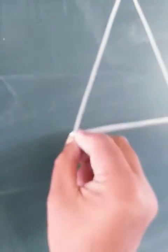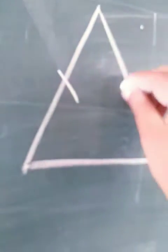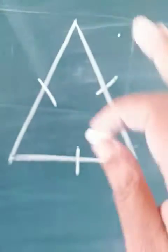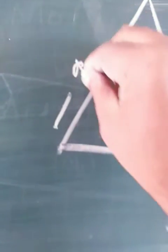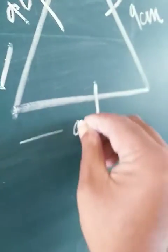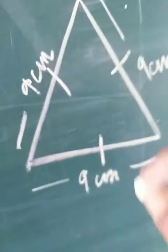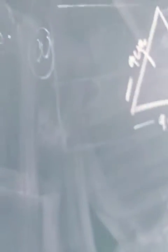Now let's move on to sum number b of question number 6. Here you have to find the perimeter of an equilateral triangle whose all sides measure 9 centimeters. An equilateral triangle is a triangle whose all sides are equal. It looks like this — all sides are equal to each other, and the measurement of each side is 9 centimeter, 9 centimeter, and 9 centimeters.